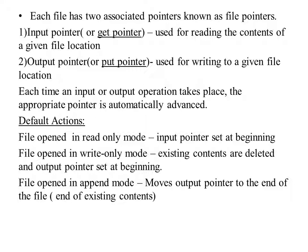There are two pointers: get pointer and put pointer. Get pointer is used when we open the file for reading — it is known as the input pointer. Put pointer is used for writing to a given file, meaning it is the output pointer when we open the file for writing. Each time we use get or put, the pointer automatically moves to the next location — it gets automatically advanced.